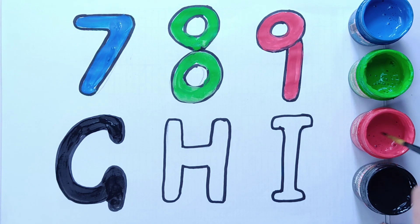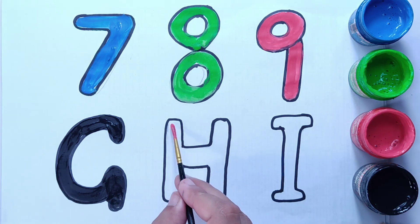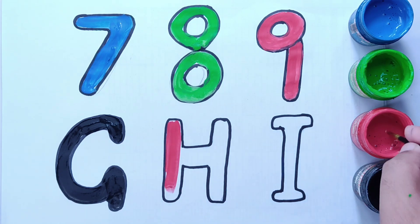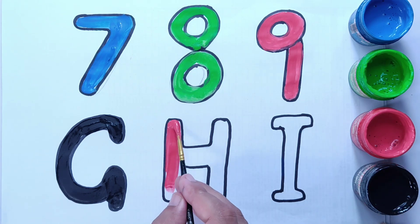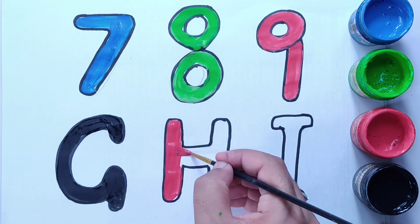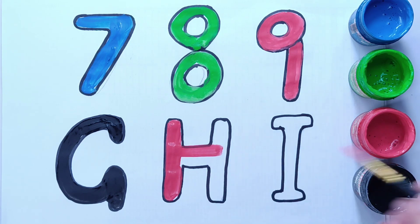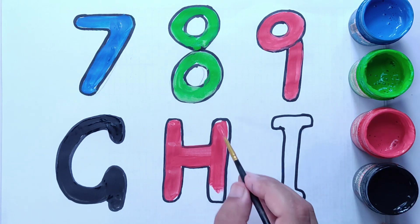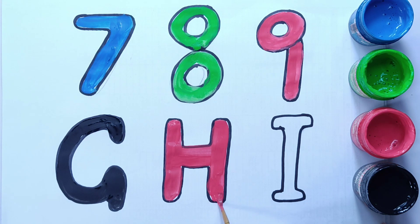Now red color for letter H. This is letter H. So you can draw like this, letter H.